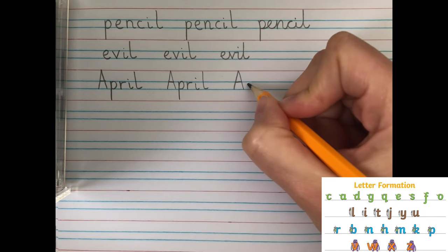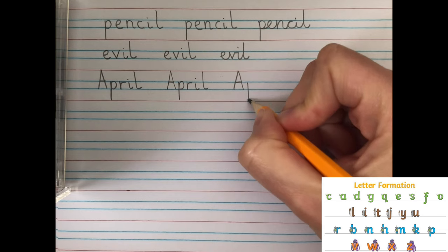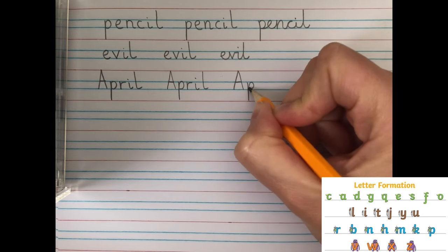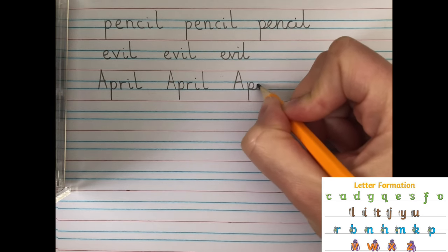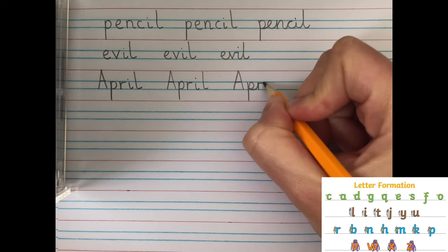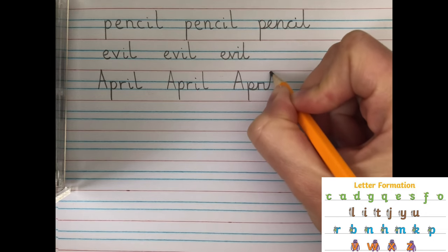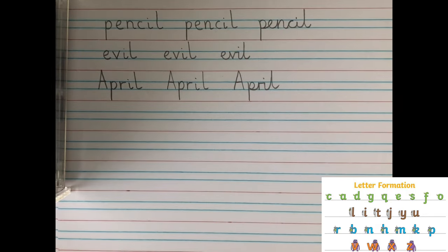And now we can join the other letters. So, P, keeping our pencil on the paper to join. So, I'm going to the R, I, L, and I, April.